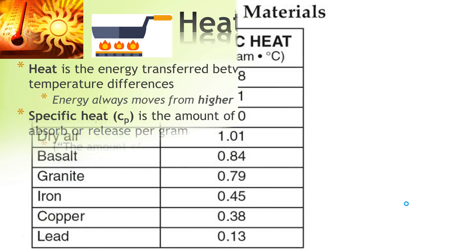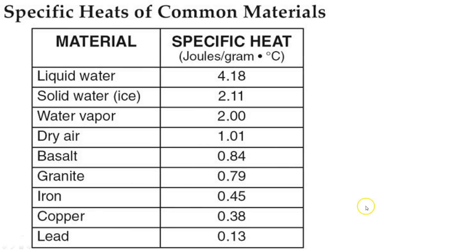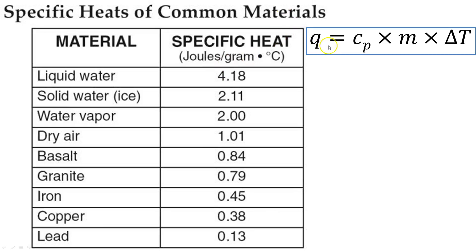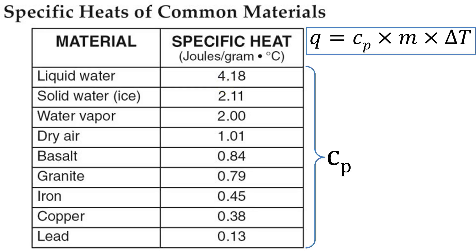Here we have some specific heats of common materials, all the way from lead at the bottom up to water at the top. In our equation Q equals C sub P times M times delta T, all of these values are C sub P. You'll notice right at the top that one of the highest specific heats of any substance is liquid water. Water takes a really long time to heat up and a really long time to cool down. This is why if you've ever bitten into pizza that was too hot, the roof of your mouth is the one that gets burned, not your tongue — there's more water in that cheese, and water stores a lot more heat energy.